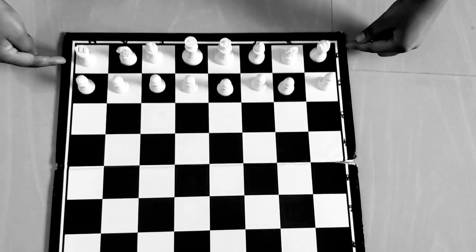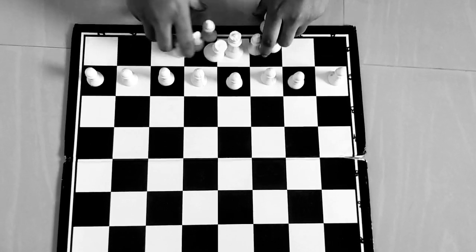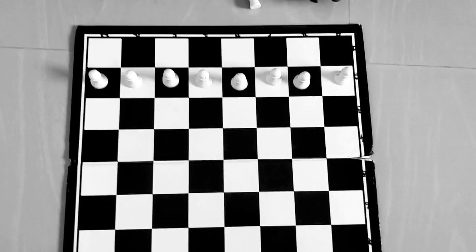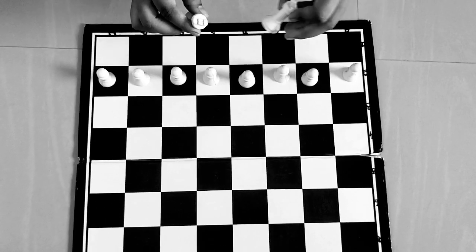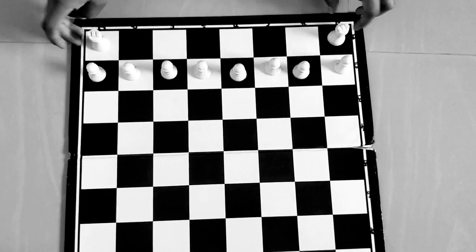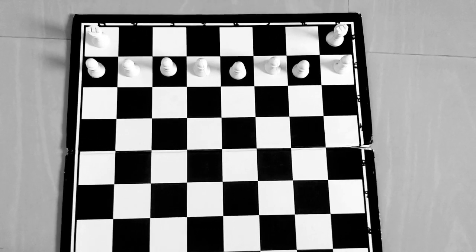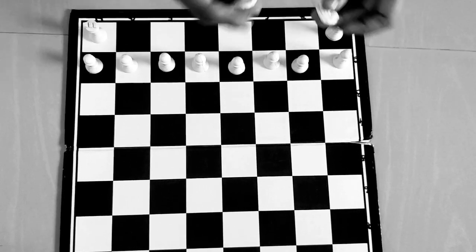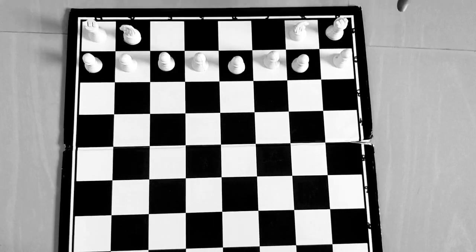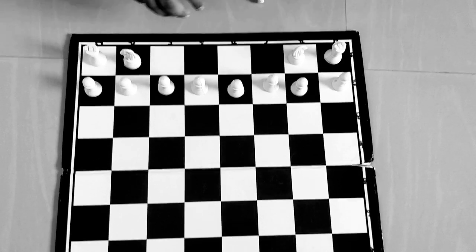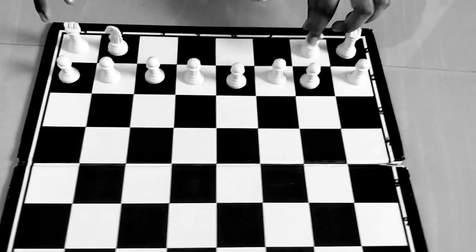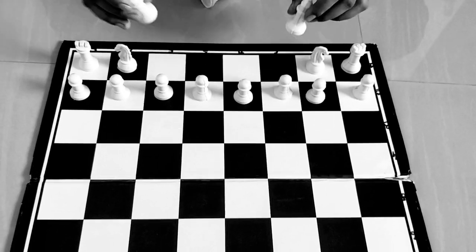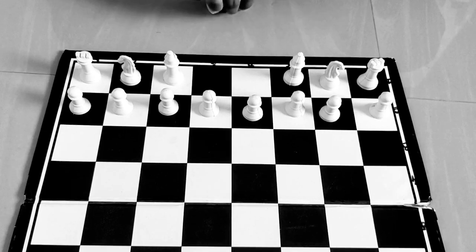When placing pieces, the rook goes in the corner box. We have two rooks on each side. Next to the rook is the knight, then the bishop, and then the king.